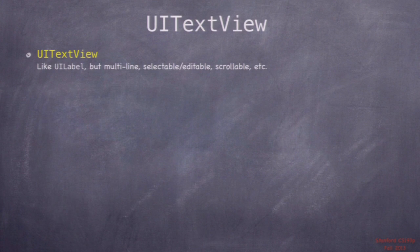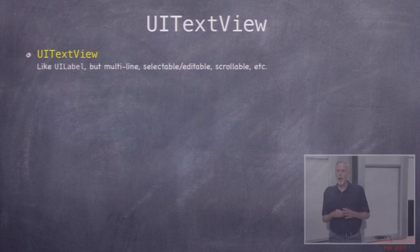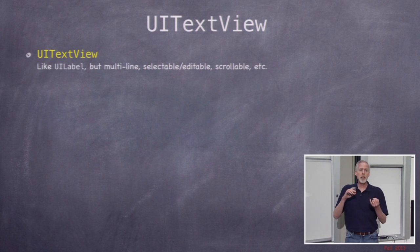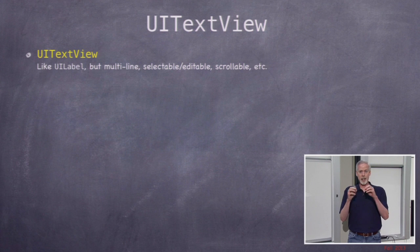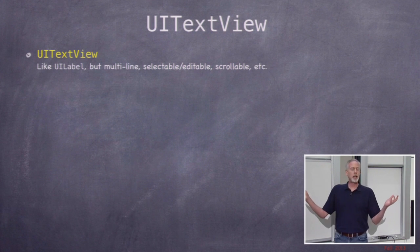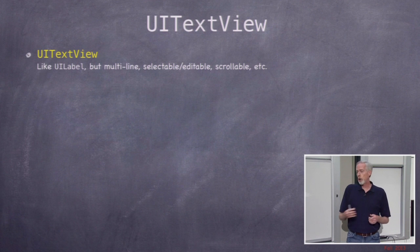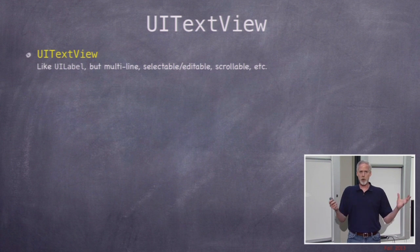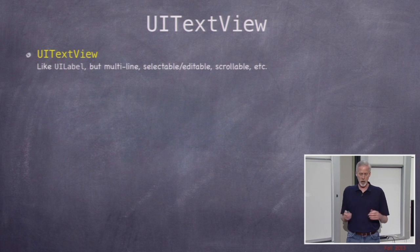UITextView is like UILabel in that it displays text, but way more powerful because the text is multi-line. With UILabel, if you want it to be multi-line, you have to say how many lines in advance, whereas UITextView uses as many lines as it needs. It's also scrollable, editable, or just selectable if you want, and you get all the mutable attributed string setting of colors and other attributes.